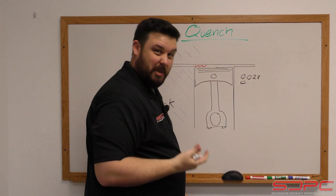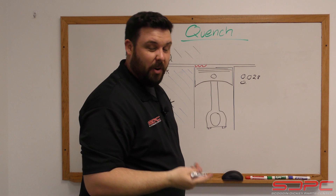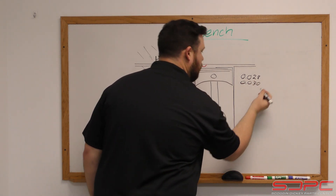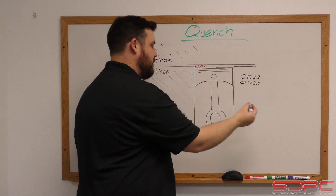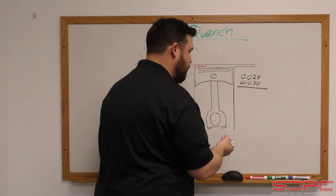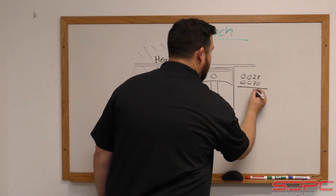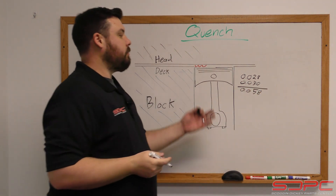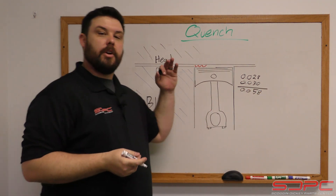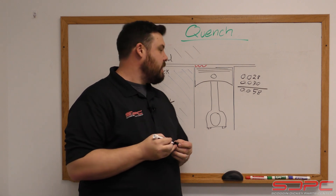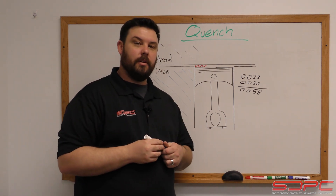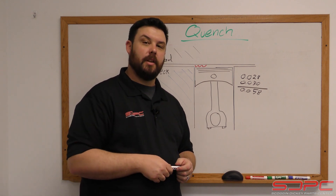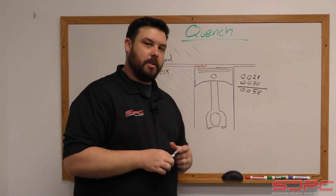Let's call the head gasket 30 thousandths. Most production small blocks are anywhere from 25 to 30 thousandths in the hole, meaning they're not zero deck, they're slightly below it. So your quench value would be the gasket thickness plus that deck distance — it comes out to 58 thousandths. For your everyday pump gas street iron small block with a forged steel rod, that's perfectly fine. Run pump gas on that all day long and you'll never have an issue.